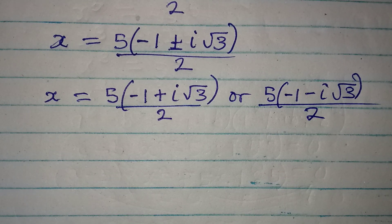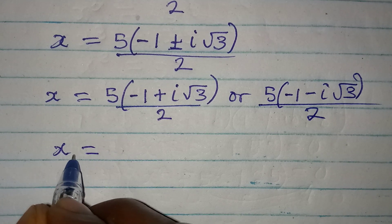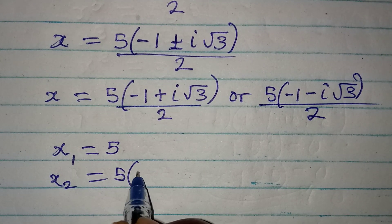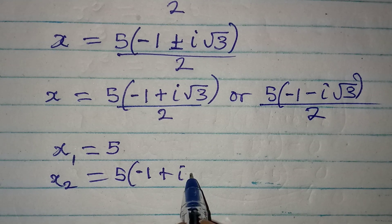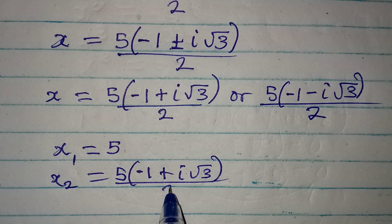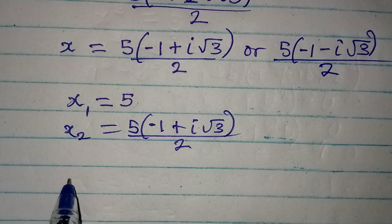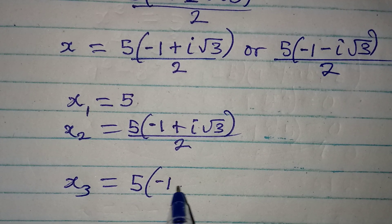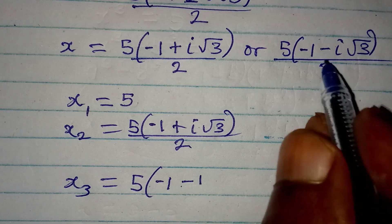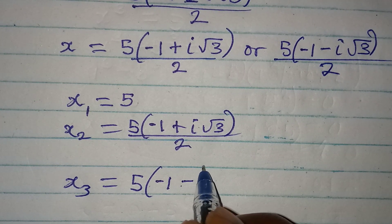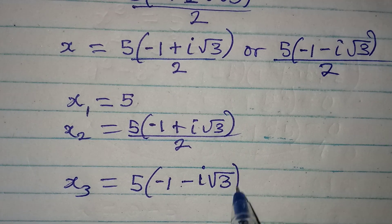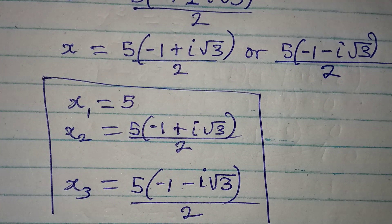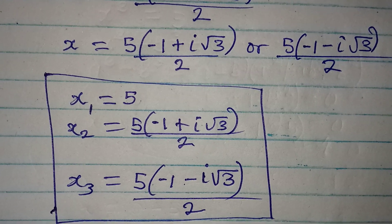Now we have two solutions from here. Let's bring the three solutions together: x₁ equals 5, x₂ equals 5 times the bracket minus 1 plus i root 3 all over 2, and x₃ equals 5 times the bracket minus 1 minus i root 3 all over 2. So these are the three solutions to the equation. Thank you for watching.